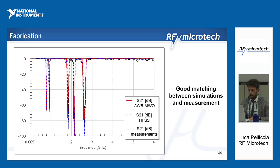Here you can see the comparison between the original circuit simulation in AWR — the red curve — the full wave design after AWR optimization — the blue dashed curve — and the measurement. The measurement agrees well up to 5.1 GHz, with some small ripple above that frequency, which was considered acceptable by the customer.